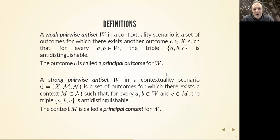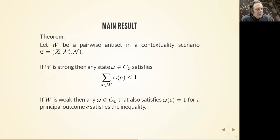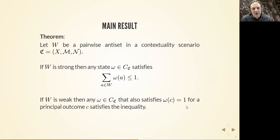Now the main result. Consider a pairwise antiset in some contextuality scenario. If it's a strong pairwise antiset, then the sum of the probabilities assigned to all outcomes in the pairwise antiset must be less than or equal to one in any non-contextual model. If it's a weak pairwise antiset, then this holds only for states that assign probability one to the principal outcome. So a strong pairwise antiset gives a state-independent inequality, and a weak pairwise antiset gives a state-dependent inequality.